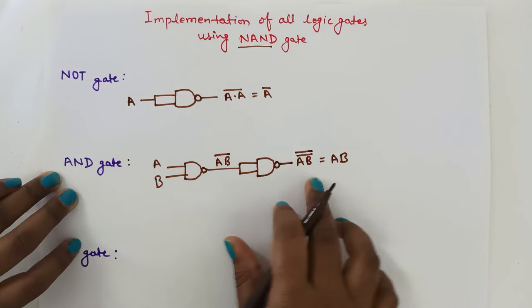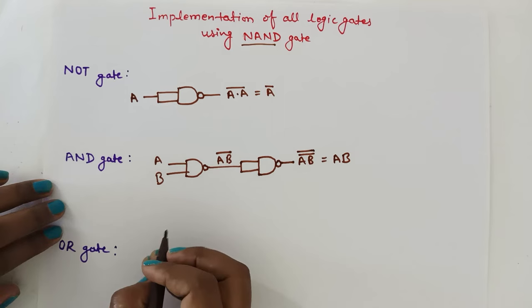So the output will be AB bar, and then AB double bar, which becomes AB. This is how we design an AND gate from NAND gate.